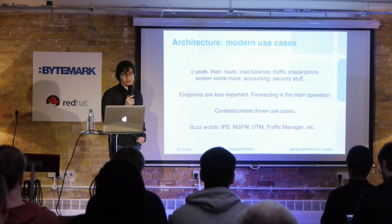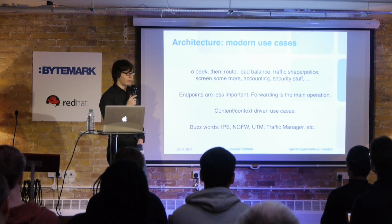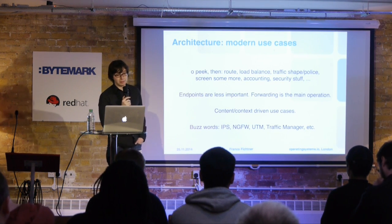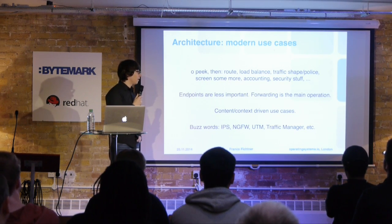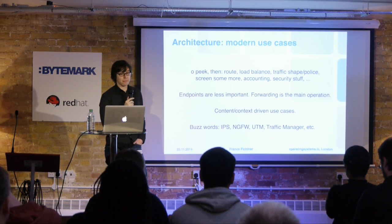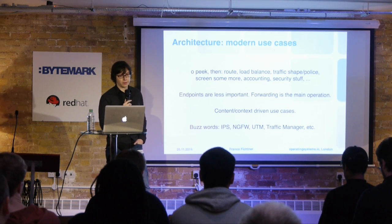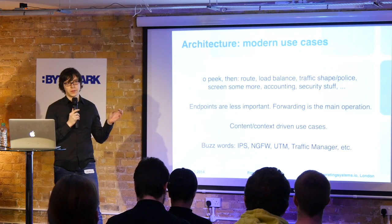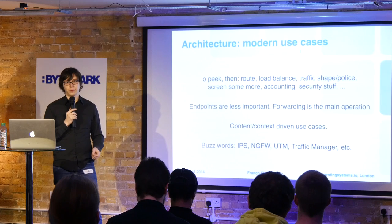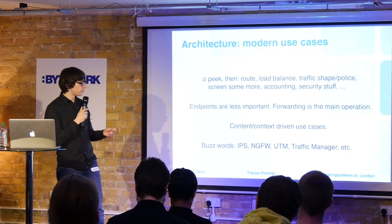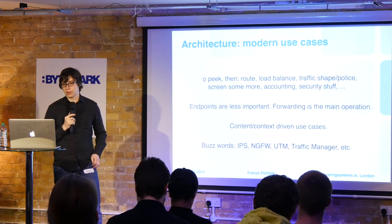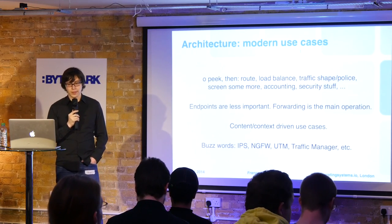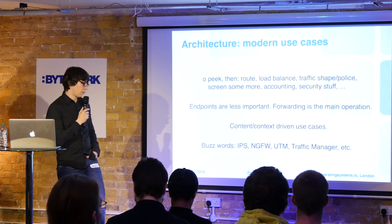For modern use cases — where we are now — we want to look at the full contents of packets: routing, load balancing, traffic shaping, policing, accounting, security applications. Endpoints become less and less important and the forwarding scenario is the main mode of operation. You pick the traffic you're interested in, don't have to worry about ports or rerouting — you just select it, run your analysis, and send it along if it's okay. All of these use cases are content- and context-driven. The obvious buzzwords here are IPS, next-generation firewall, unified traffic management, and so on.